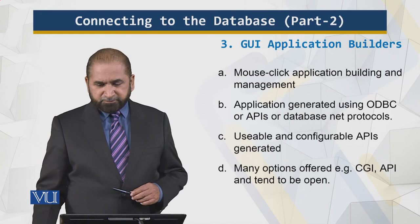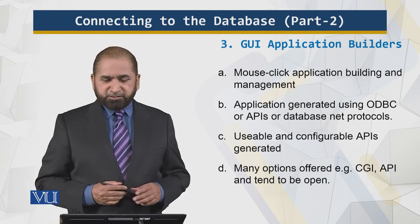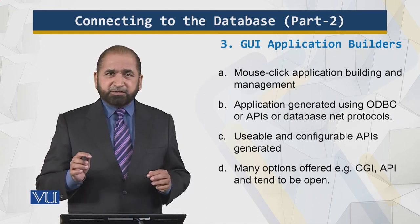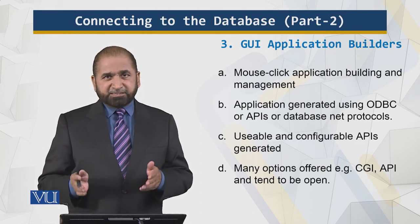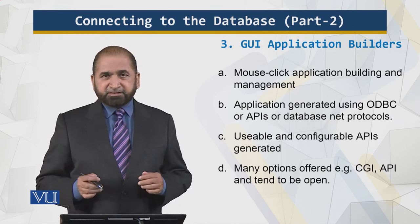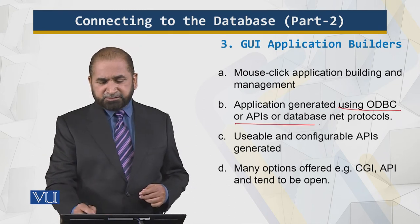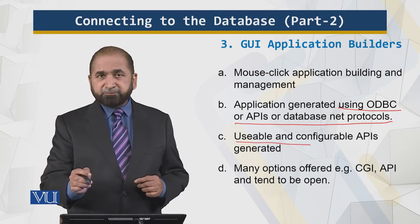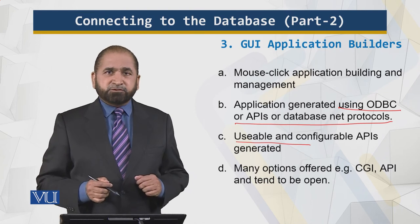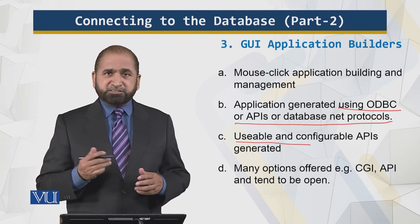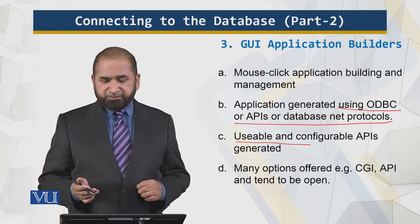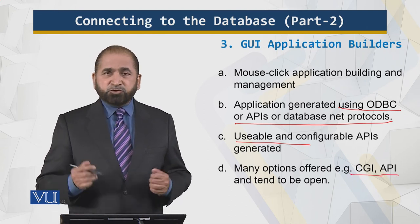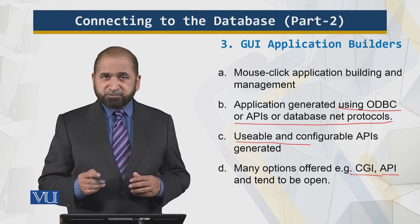Now let's look at the other approach: GUI application builders — graphical user interface — mouse-click application building and management. The programmers who are used to working in a graphical environment, point and click — this kind of application is for them. This application is generated using ODBC, APIs, or database net protocols. The benefit is that usable and configurable APIs are generated — you can change them, customize them, and use them. There are many options: CGI, API — they tend to be open.